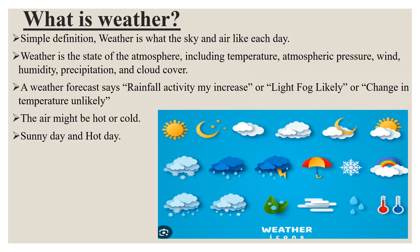By looking at the picture, we can see different weather icons. First, we gotta learn what is weather. Simple definition: weather is what the sky and air are like each day. Weather is the state of the atmosphere, including temperature, atmospheric pressure, wind, humidity, precipitation, and cloud cover. A weather forecast says rainfall activity may increase, or light fog likely, or change in temperature unlikely. The air might be hot or cold — a sunny day or a hot day.